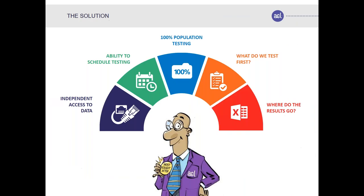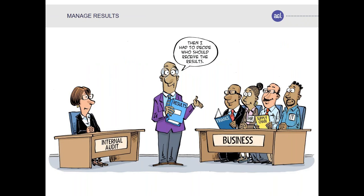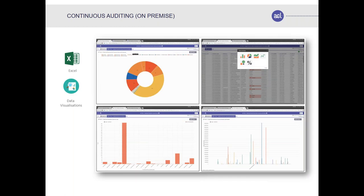Once Alan decides his scope of analysis, the next question is who gets the results. If results go to audit, it becomes a continuous auditing function; if results go to business, it becomes continuous monitoring. Today we're focused on continuous auditing, which is an on-premise solution — the data never leaves your environment. You're able to work with that data via Excel for detailed analysis, or via visualizations where you can chart, graph, and drill down on information.